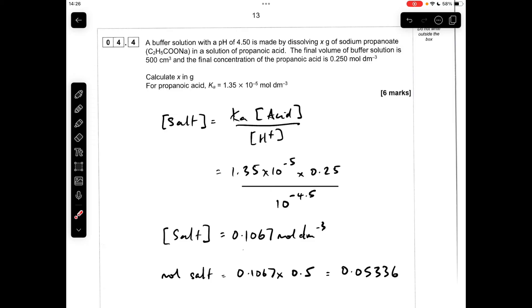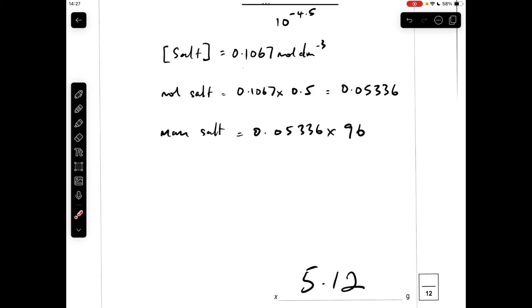All we need to do now is multiply by the MR of the sodium propanoate and get the mass. The MR came out at 96, so that gives an answer of 5.12 grams for the mass of the salt.